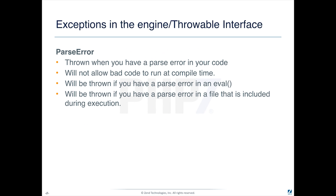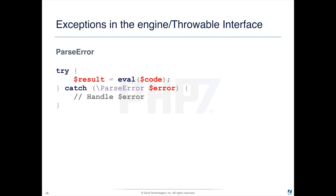ParseError will be thrown when you have a parse error in your code. This doesn't mean that you could write bad code that PHP ignores at compile time and then throws a ParseError when it hits that line. Parse errors are for two very specific situations: evals, as we've talked about, and conditionally included files that might have errors in them. An eval is very simple — if I have a string called $code with a PHP command in it, and there's a problem with that, and it evals, and the compiler says nope, then I'm going to get a ParseError. And I can handle that error and then gracefully shut down.